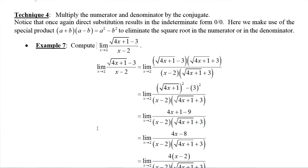We'll make use of a special product from algebra: if you take the sum and difference pattern, a plus b times a minus b, multiplying using FOIL gives a squared minus b squared. The middle terms cancel, leaving a difference of two squares. Here we have the square root of 4x plus 1 minus 3 in the numerator. The a is the square root of 4x plus 1 and b is 3. We multiply by the conjugate, square root of 4x plus 1 plus 3, balancing it by multiplying the denominator by the same thing.